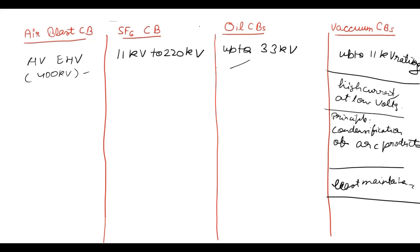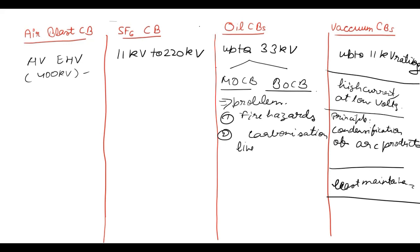Now oil circuit breakers are of two types, which is minimum oil circuit breaker and bulk oil circuit breaker. There are two basic problems here. First is fire hazards due to the oil presence. Second is carbonization of live parts or you can say conducting parts.